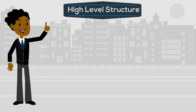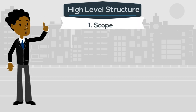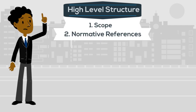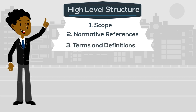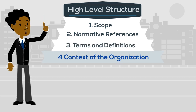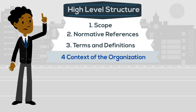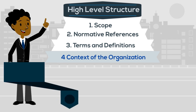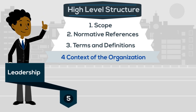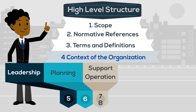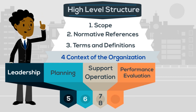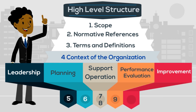The high-level structure of the ISO 9001:2015 standard includes: Scope (Clause 1), Normative References (Clause 2), Terms and Definitions (Clause 3), Context of the Organization (Clause 4), Leadership (Clause 5), Planning (Clause 6), Support (Clause 7), Operation (Clause 8), Performance Evaluation (Clause 9), and Improvement (Clause 10).